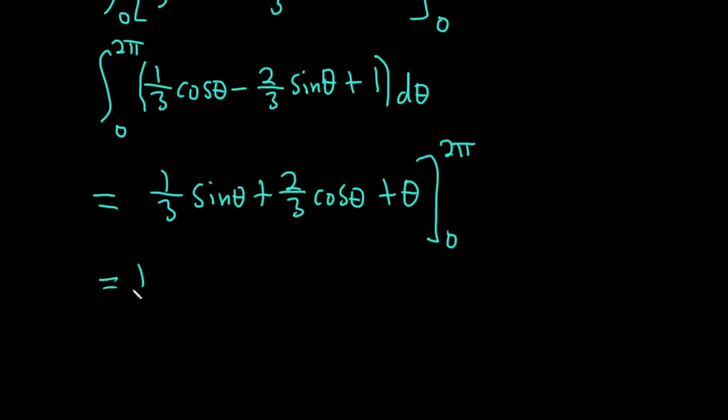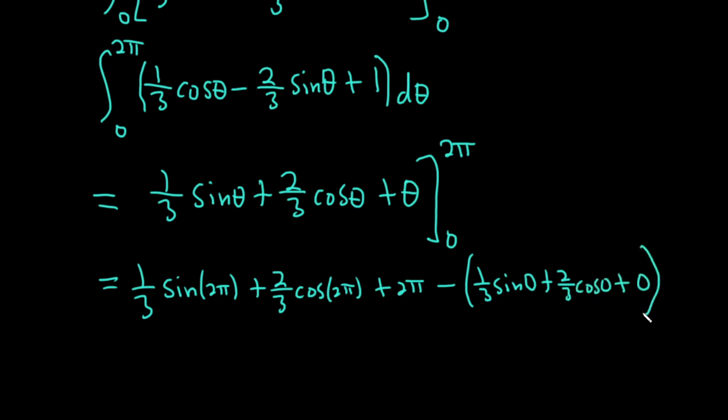Plugging in the 2 pi first, we get 1 third sine 2 pi, plus 2 thirds cosine 2 pi, plus 2 pi, minus, 1 third sine 0, plus 2 thirds cosine 0, plus 0. Did that really quick. Let me just check. Plug in the 2 pi, check, check, check, subtract, plug in the 0, check, check, check. Okay.